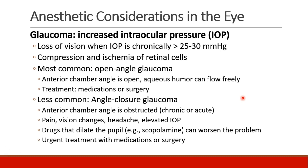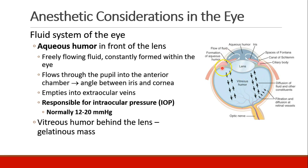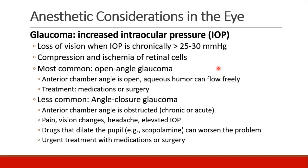The most common type of glaucoma is called open angle glaucoma, again referring to this drainage angle. In open angle glaucoma, the anterior chamber angle is open and the aqueous humor can flow freely. The treatment is usually with medications or surgery.